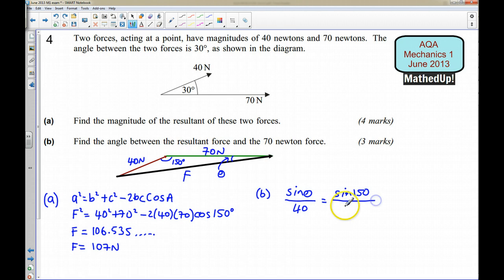And I'm going to use the more accurate version, I'm going to use 106.535. So I'm using this to reduce the error. So that means sin θ is going to be equal to, and I can multiply both sides by 40.